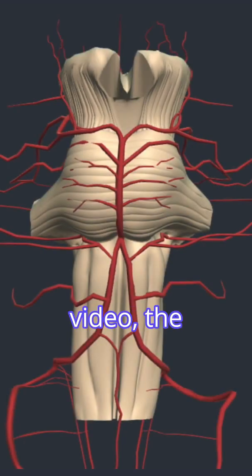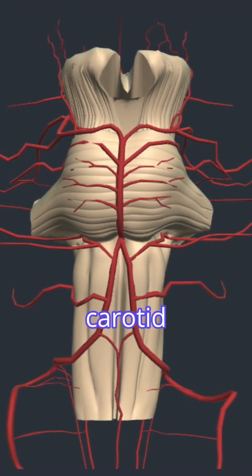If you recall from the first video, the blood supply for the brain comes from the vertebral and internal carotid arteries.